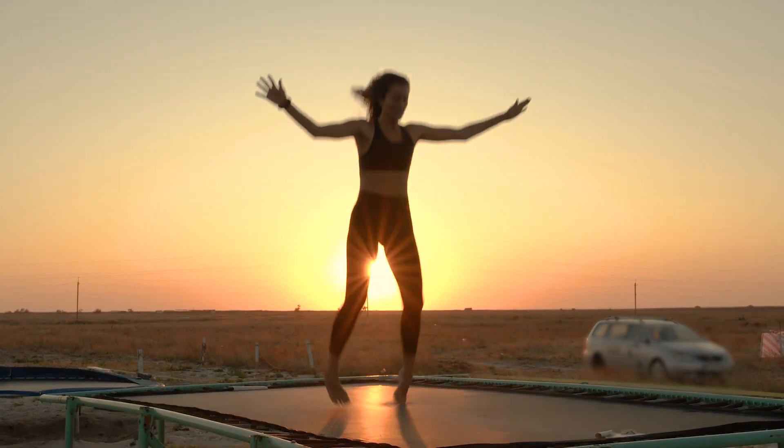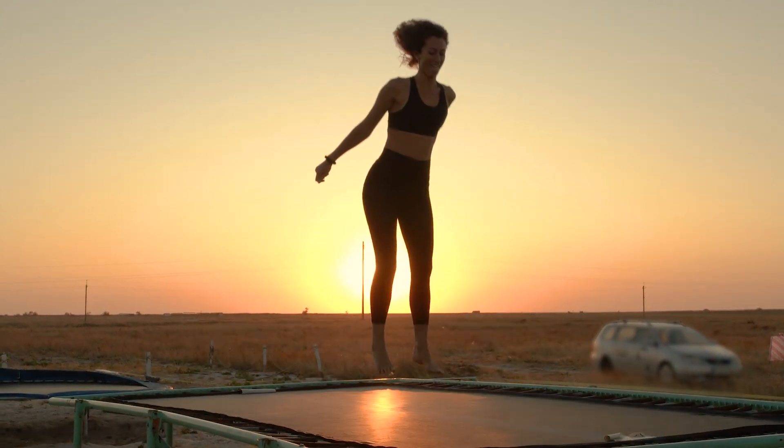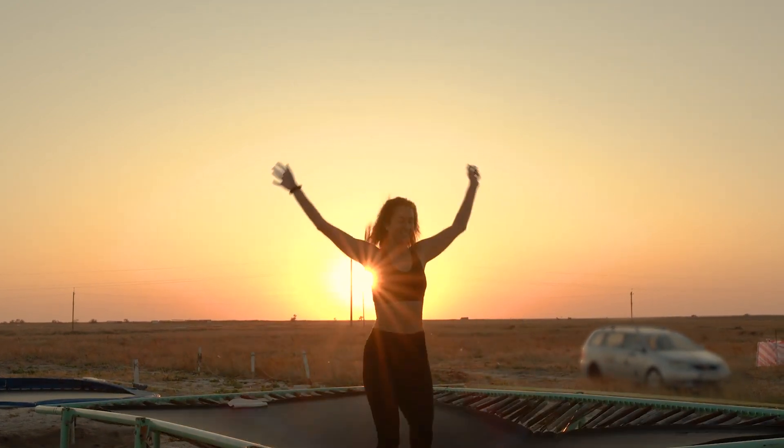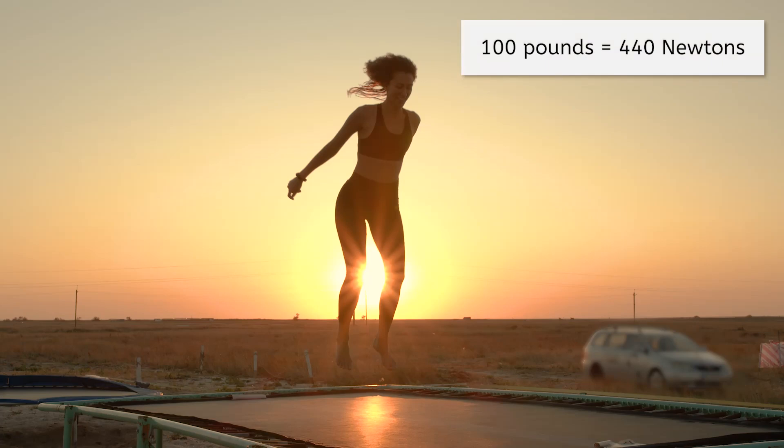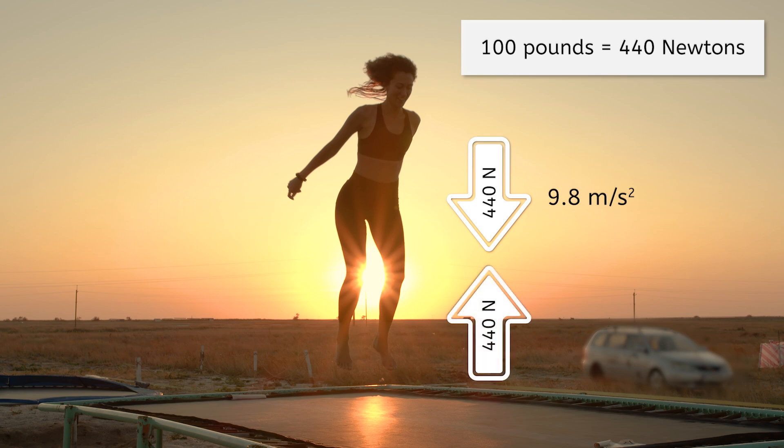This same idea explains why jumping on a trampoline results in you falling back down to the earth, instead of the earth falling up to you. If you have a weight of 100 pounds, that's approximately 440 newtons. So the earth puts a force of 440 newtons on you, which causes you to fall downward at a rate of 9.8 meters per second squared. You also put a force of 440 newtons on the earth. But good luck noticing any acceleration at all of the earth toward you, because it is so much more massive. That force of 440 newtons is minuscule in relation to a planet.